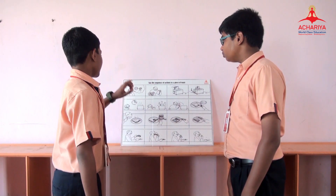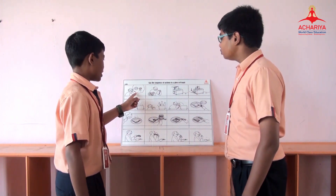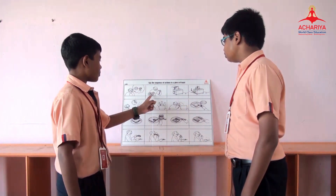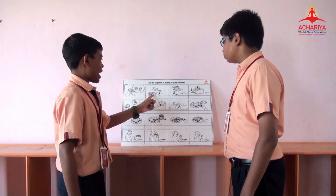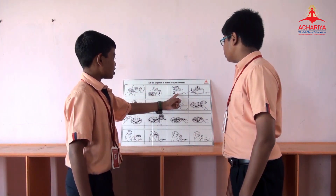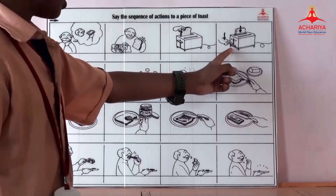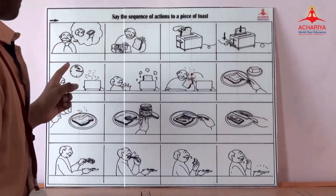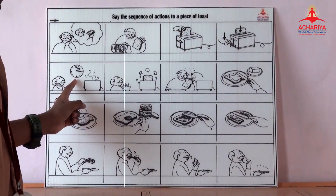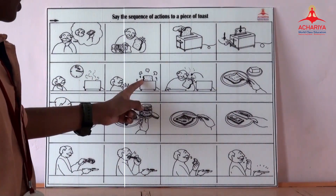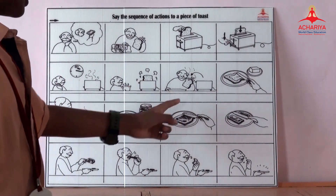Describing the picture. He wants to have a bread. He takes the bread out of the pack. He puts it on a toaster. He turns on the toaster. He waits for 60 seconds. The bread comes out.